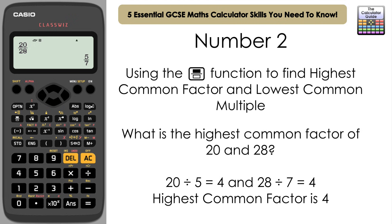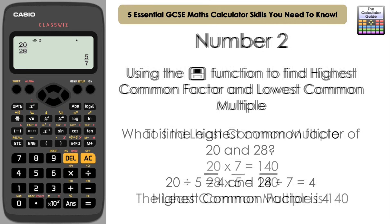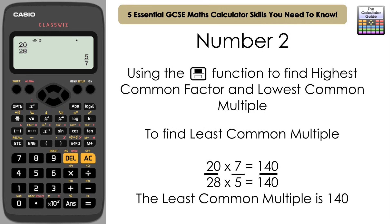Now flip the fraction the other way to 7 fifths. Multiply 20 by the top (7) to get 140, or multiply 28 by 5 to also get 140. So 140 is the lowest common multiple — a sneaky hack using the fraction button.